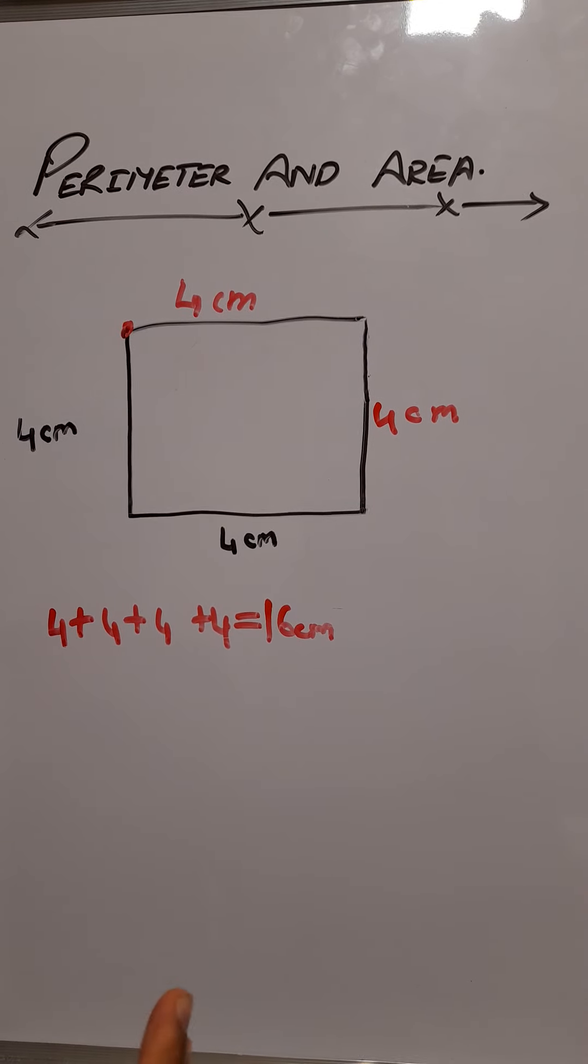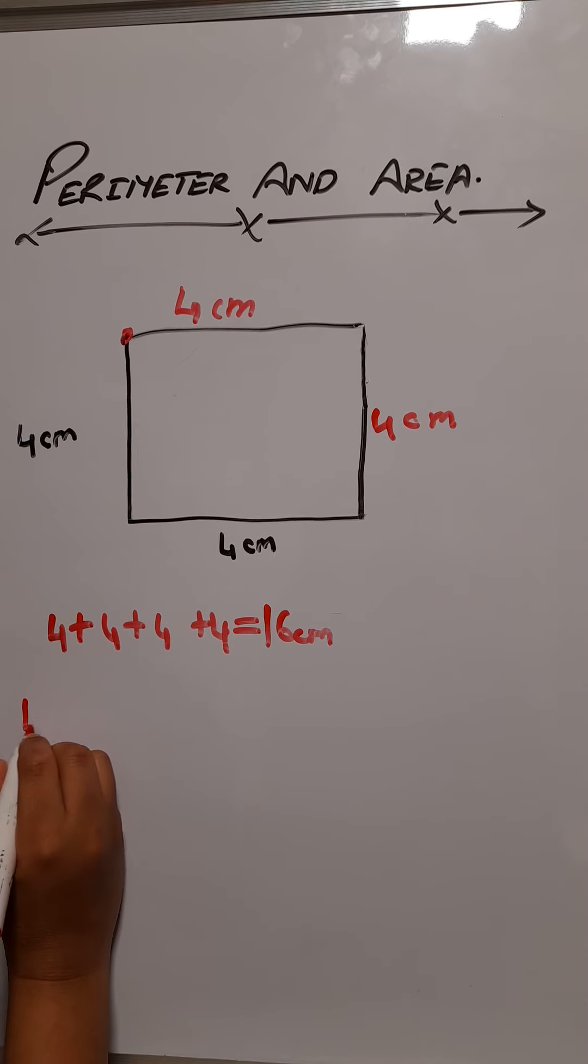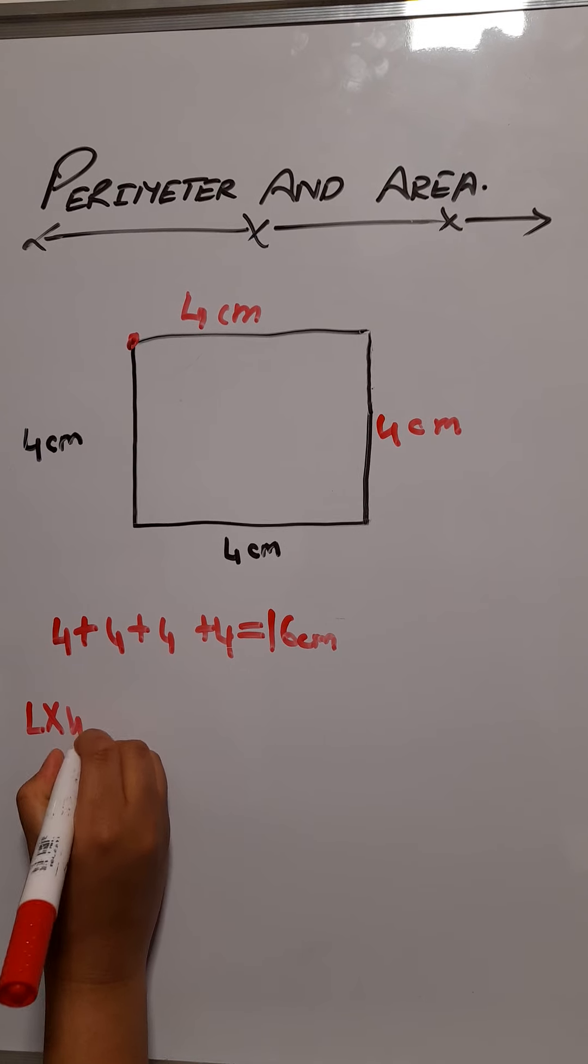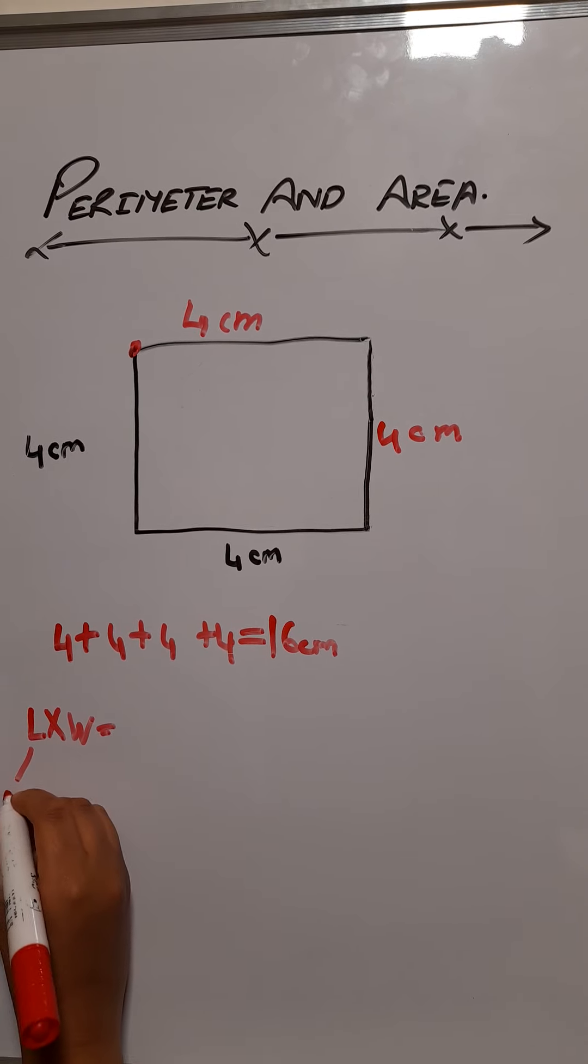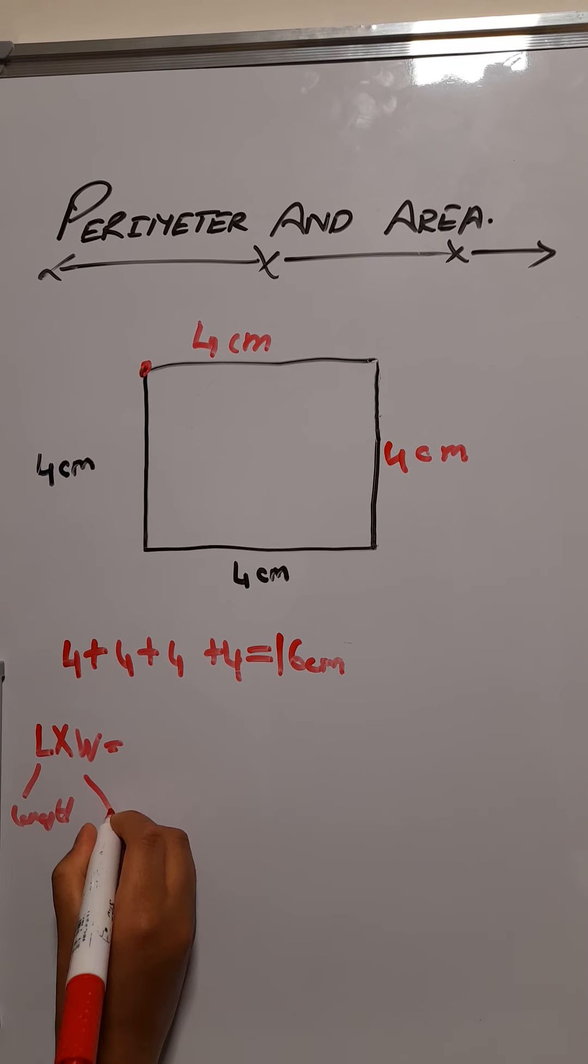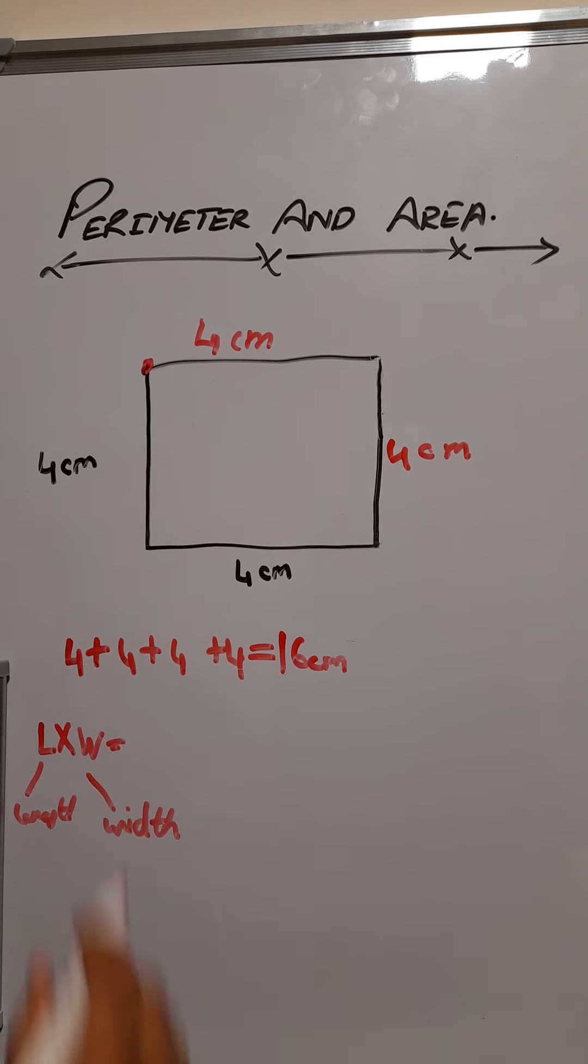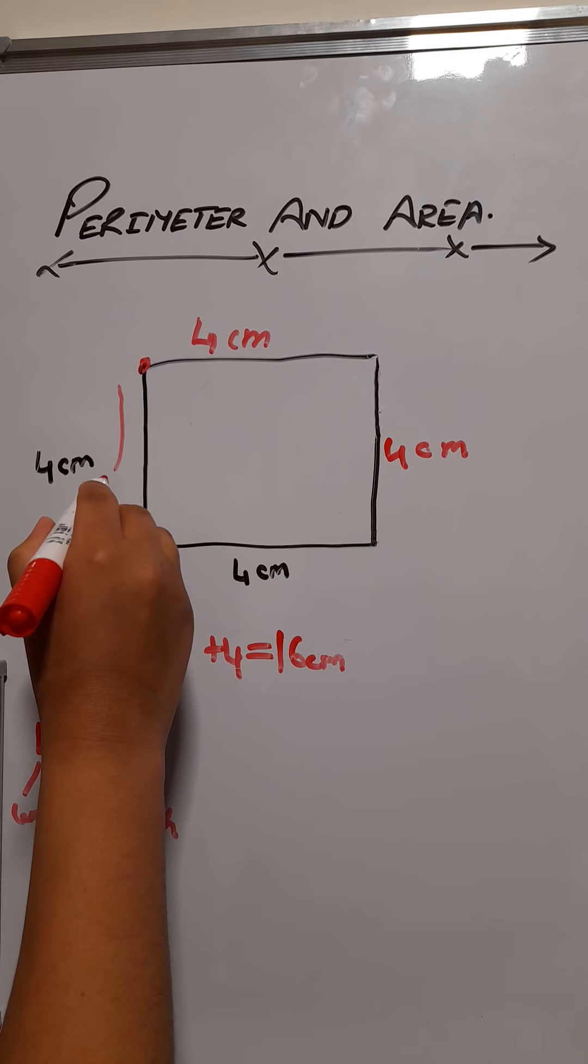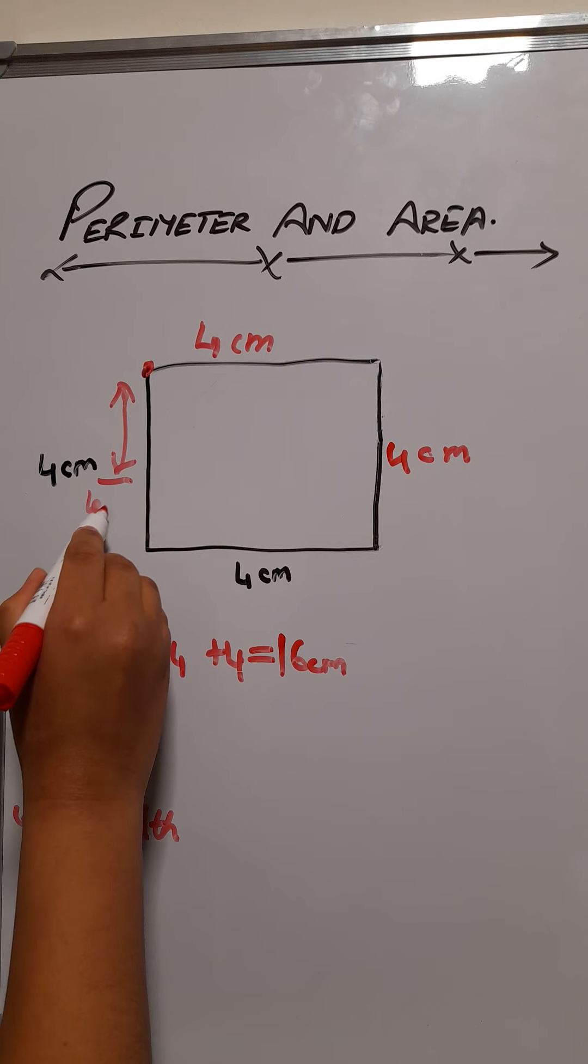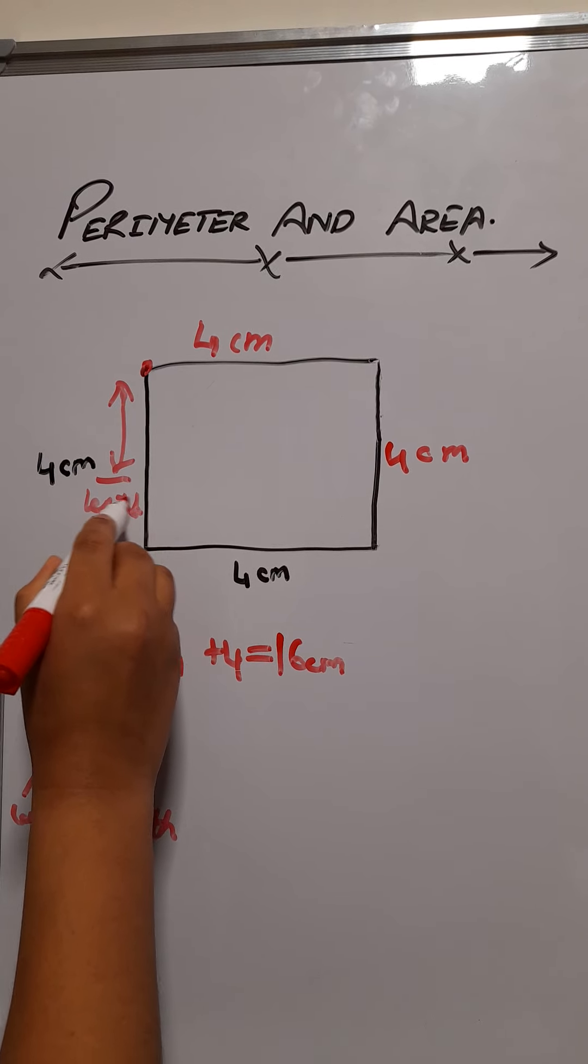Area is length times by the width. We can write that as L times W. L means length and W means width. This is what we call the length, and this is the width.